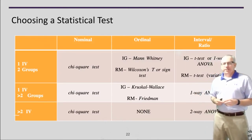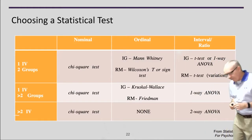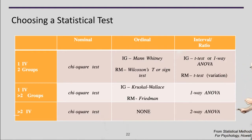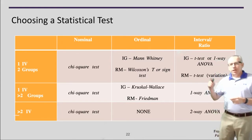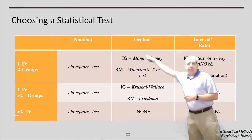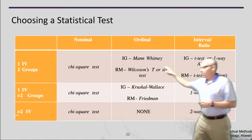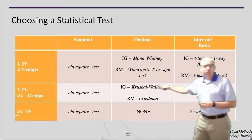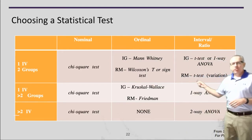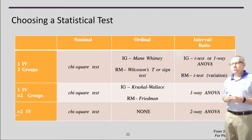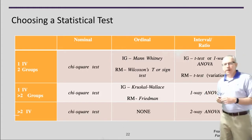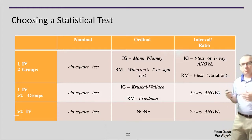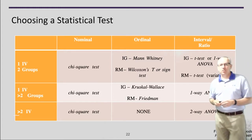So how do you choose a statistical test? I borrowed a chart from Statistical Methods for Psychology by Howell — it's a really good reference. You have to think about what kind of data you have: nominal, ordinal, or interval/ratio. And then how many groups do you have? This chart gives a handy reference for deciding which test to use. It's not complete, but it's a good place to start, and we can talk more about specific tests as you get into your studies.